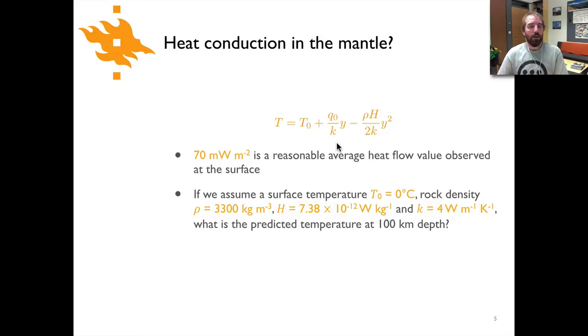Here's that same equation and now we're going to take a look at a sort of silly case about heat conduction. A reasonably good estimate of surface heat flow would be something like 70 milliwatts per square meter. Let's make some assumptions: temperature at the surface is about zero degrees celsius on average, rock density we'll use a mantle rock density of 3300 kilograms per cubic meter, plus heat production by mass and thermal conductivity.